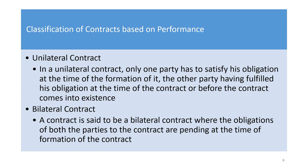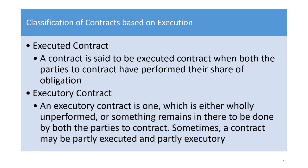Now, classification of contract based on performance. There are two types: unilateral and bilateral. A unilateral contract is one where only one party has to satisfy the obligations — out of the two parties, only one needs to perform. A bilateral contract is one where both parties have to satisfy their obligations. Unilateral means one side, bilateral means both sides.